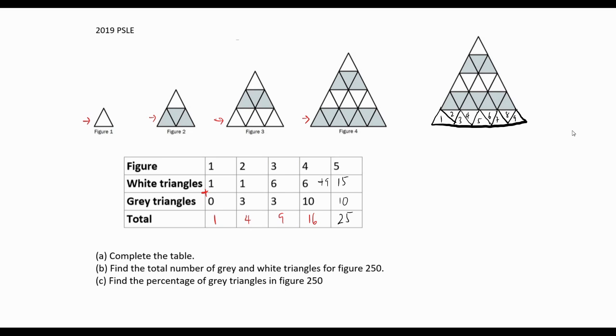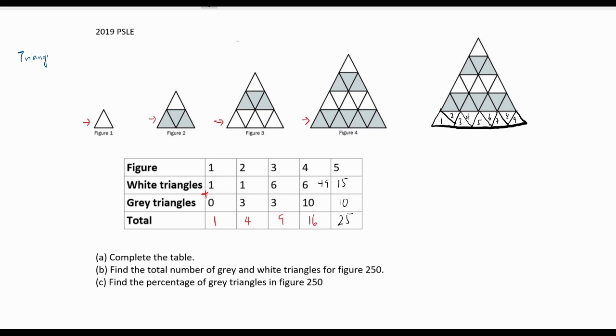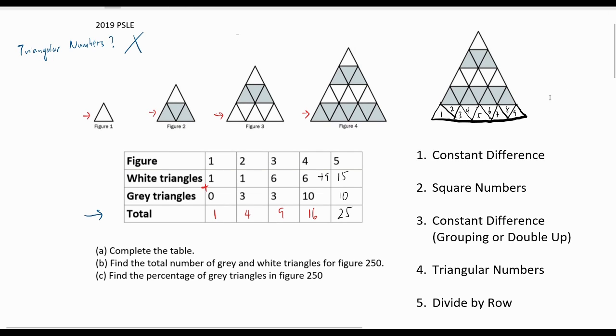For part B, we are required to find the total number of triangles. Looking at the diagram, it's almost like a triangular pattern sequence, but don't be tricked. Look at the numbers here. Do you immediately recognize this pattern? If not, go down the list of common patterns and eliminate what you can. It's not constant difference,